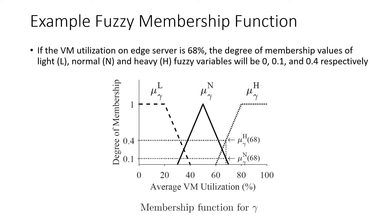In this figure, you can see the membership functions for the fuzzy input variable delta, which is average VM utilization. We have three linguistic terms for this input: light, normal, and heavy. In fuzzy logic, we don't use numerical values — instead we have a degree of membership. For example, if the virtual machine utilization on an edge server is 86, the degree of membership for 'light' is 0, the degree of membership for 'normal' is 0.1, and for 'heavy' is 0.4.